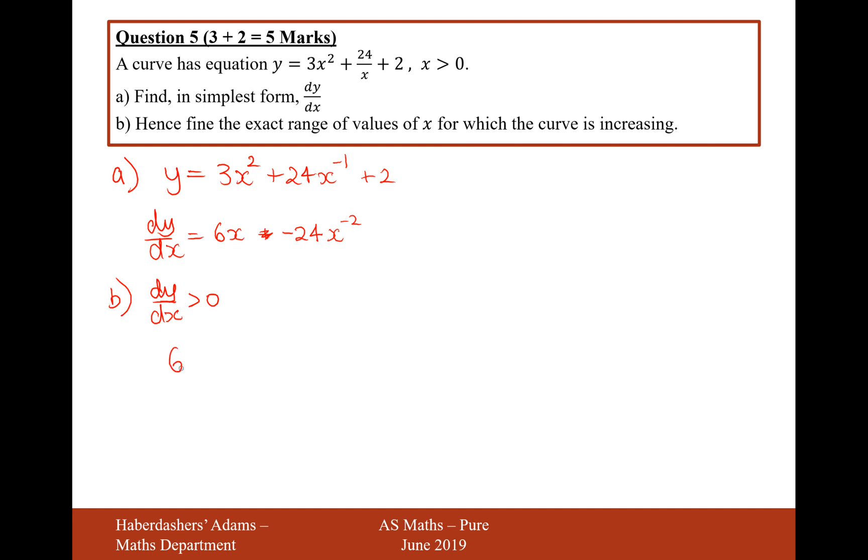So therefore we need to solve 6x minus 24 over x squared is greater than 0. So let's now solve this. Let's move the 24 over x squared onto the other side. Times by x squared.